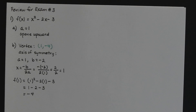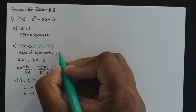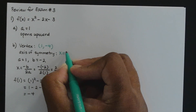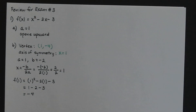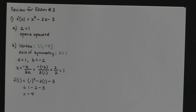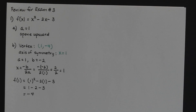The axis of symmetry is that vertical dotted line going through the x-axis at that x value. So the axis of symmetry is x equals 1. On the exam, make sure you write x equal to whatever the x-coordinate of the vertex is, because the axis of symmetry represents a vertical dotted line, and the equation for a vertical line is x equal to that constant.